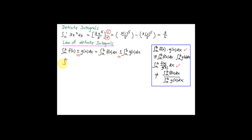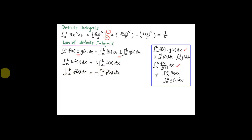Next, if you have integration from a to b of k·f(x) dx, where k is a constant, you can take out k and multiply it with integration from a to b of f(x) dx. Also, integration from a to b of f(x) dx equals negative integration from b to a of f(x) dx — you can switch positions a and b, but multiply by negative one.